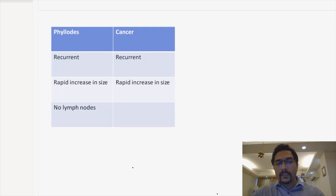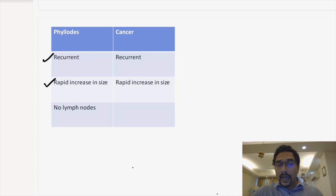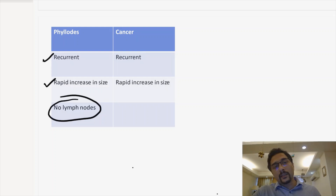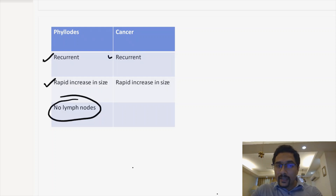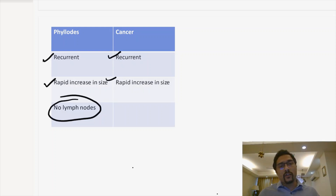Points in favor of phyllodes: recurrent breast lump that recurred within two years of surgery, rapid increase in size, and importantly no lymph nodes — less than 10% of phyllodes tumors go to lymph nodes. For cancer: it is a recurrent lump with rapid increase in size. But the fact that the lump is so large with no lymph nodes goes against the diagnosis of cancer.